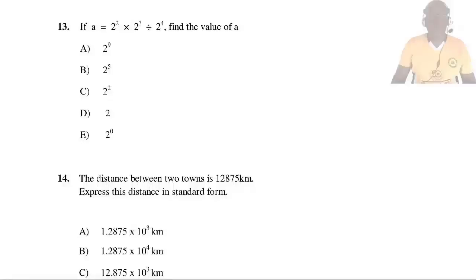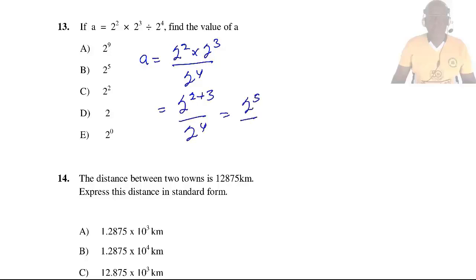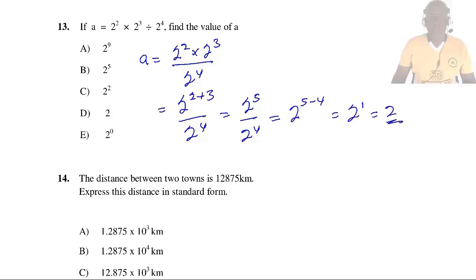Question 13: If A = 2² × 2³ ÷ 2⁴, find the value of A. A = 2² × 2³ ÷ 2⁴. Adding indices: 2^(2+3) = 2⁵. Then 2⁵ ÷ 2⁴ = 2^(5−4) = 2¹ = 2. So the answer is D.